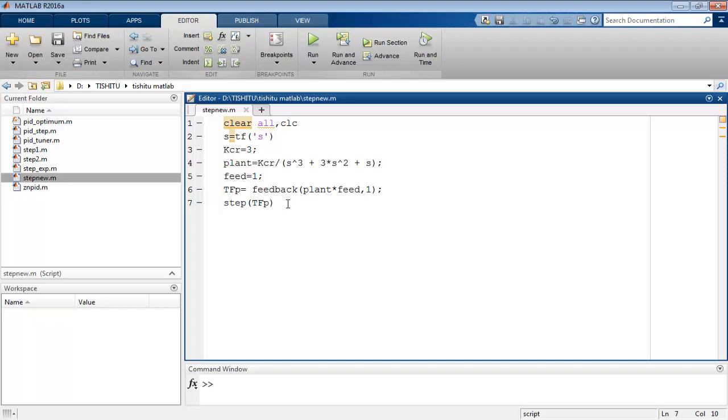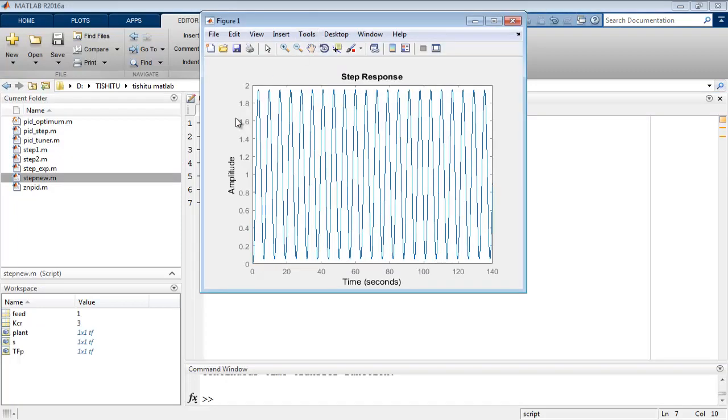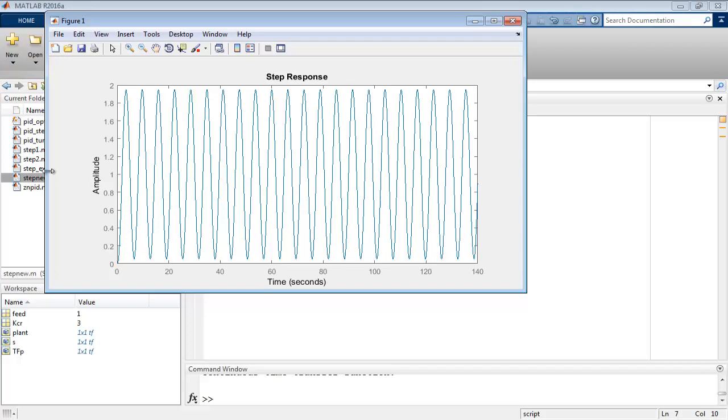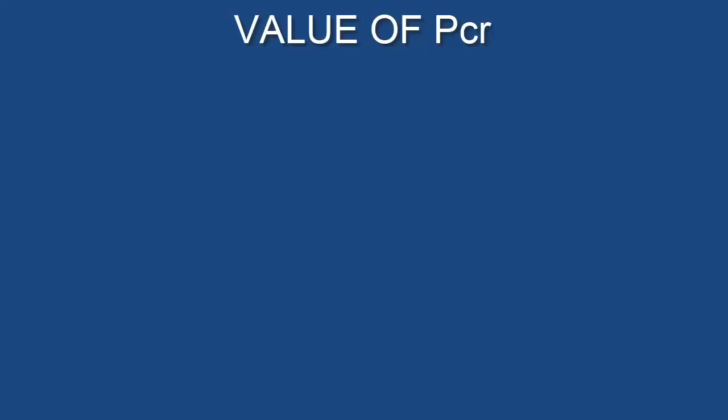We discussed these basic steps of code to obtain the response of the system many times in previous classes - please refer to them for conceptual study. To observe the response, we run this file and get the response. As we can easily observe, the response of the system has sustained oscillation.